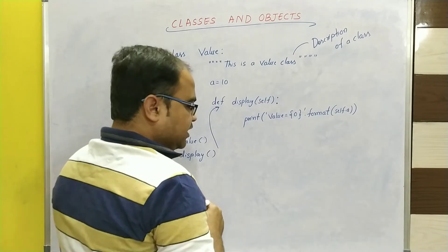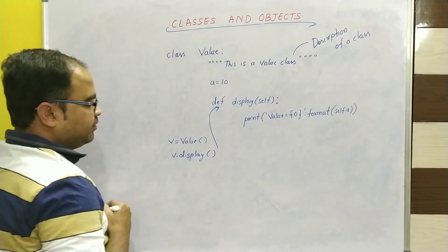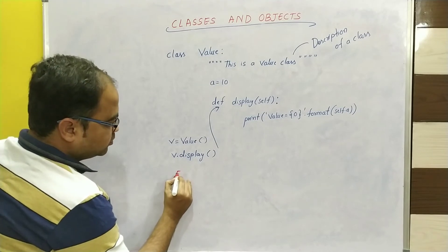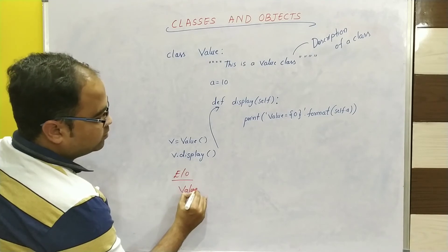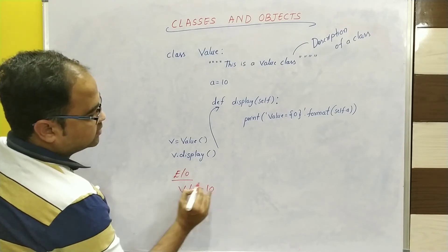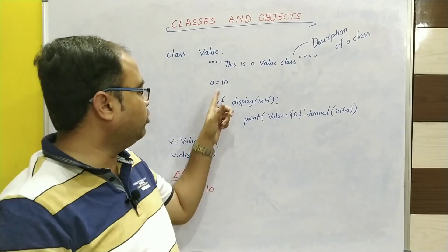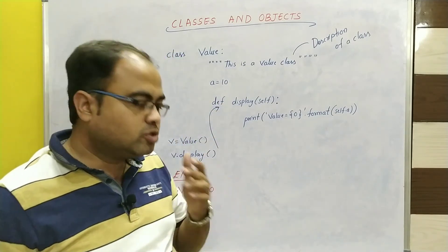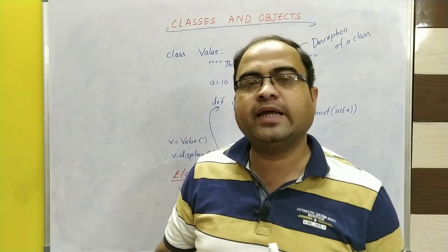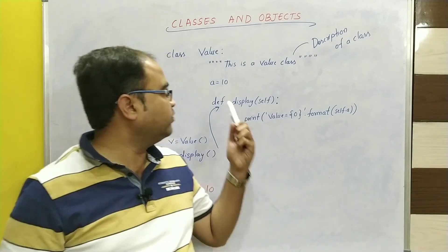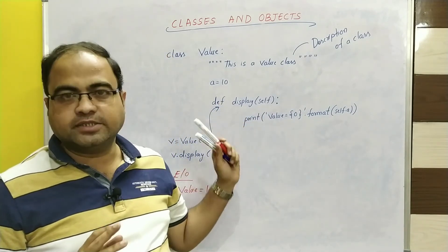The expected output of this program will be: 'Value = 10'. Whatever value we have given to variable 'a', that value will be displayed as the output. So this is how we can create a class in Python, this is how we can define and declare instance variables, and this is how we can declare and define methods.